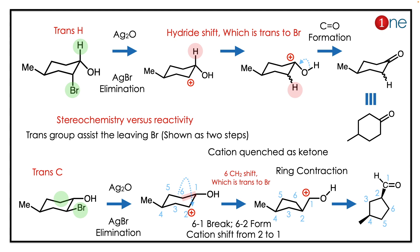A bromine elimination reaction is occurring because we are using silver oxide. The bromine elimination is facilitated because it is assisted by a trans group. In the first reaction, hydrogen is trans to bromine, so the first step is easy — bromine eliminates and you have a cation near the alcohol.